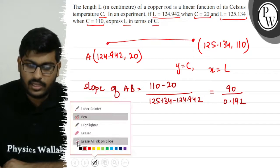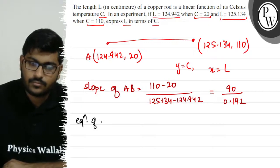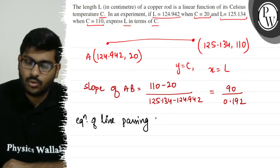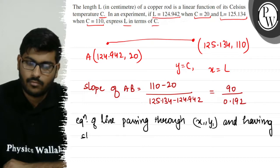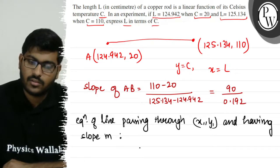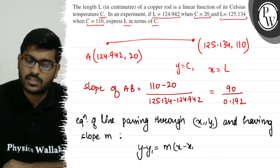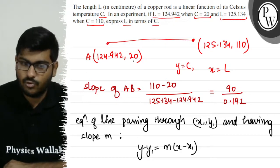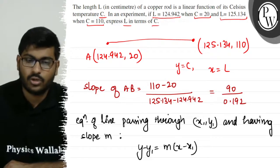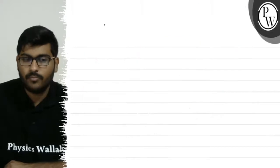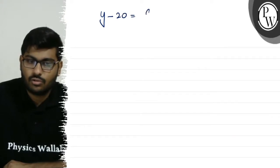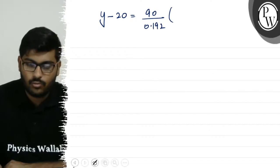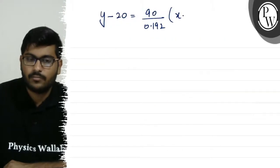We know the equation of a line passing through point (x1, y1) with slope m is: y minus y1 equals m times (x minus x1). We put x1 as 20 and y1 as 124.942, and the slope is 90 upon 0.192. So y minus 124.942 equals (90/0.192) times (x minus 124.942).